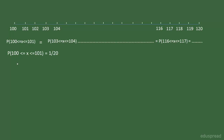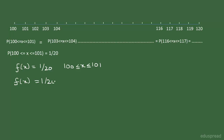So we can write f(x) is equal to 1/20 for values of x between 100 and 101. Similarly, the probability that the value of x will lie between 101 and 102 is also equal to 1/20. So f(x) is equal to 1/20 for values of x between 101 and 102.